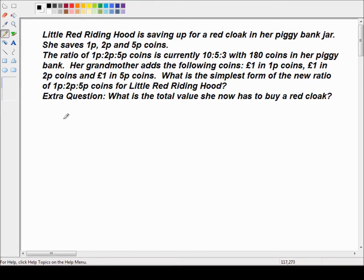Okay, so her ratio of coins is 10 to 5 to 3. And there are 180 coins. Now this ratio, what does it mean? It means that there are 10 out of every, 10 plus 5 plus 3, well 10 plus 5 is 15, 15 plus 3 is 18. So there's 10 out of 18 coins are 1p.